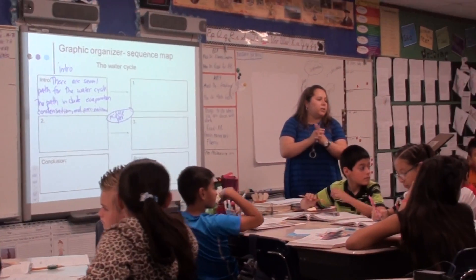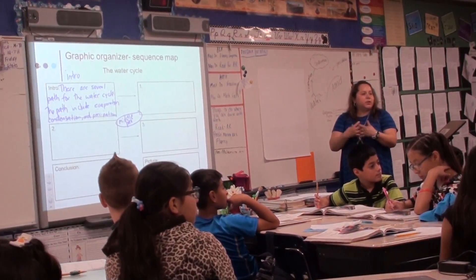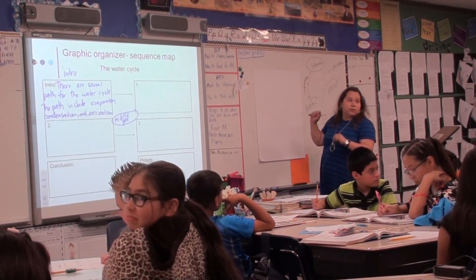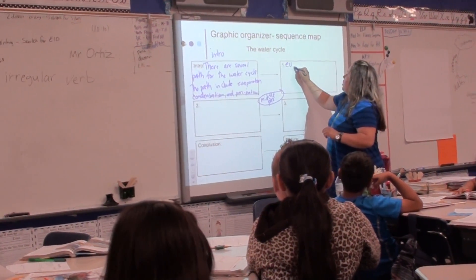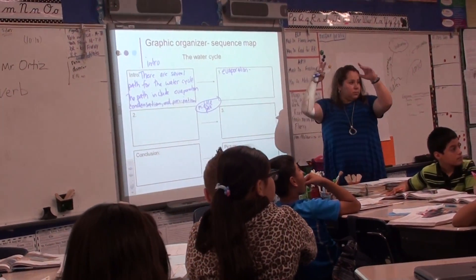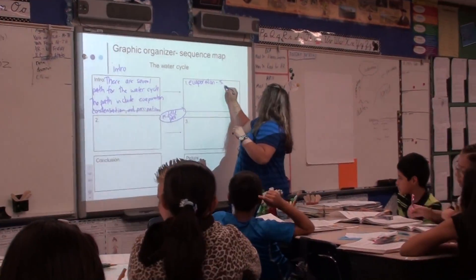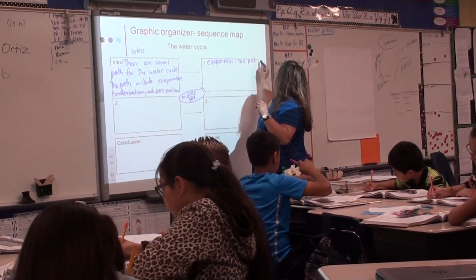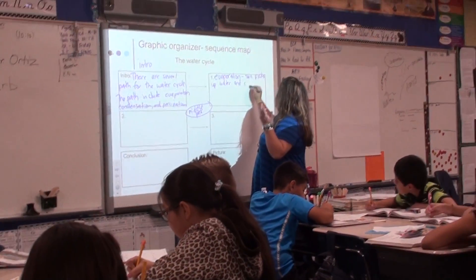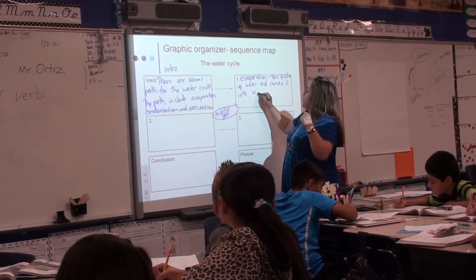Zachary, what is the first step of the water cycle? The first step of the water cycle is evaporation. Can you tell me a little bit about evaporation? Evaporation is when the sun picks up water — we call that vapor. The sun picks up water and converts it into vapor. Good job.